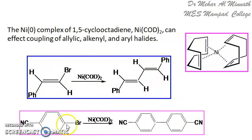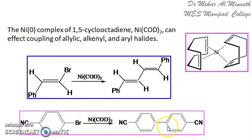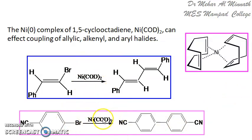Another example: here you have an aryl halide. You treat it with Ni(COD)₂ twice and you get a biaryl compound. Nickel cyclooctadiene is more preferred because it is less toxic.